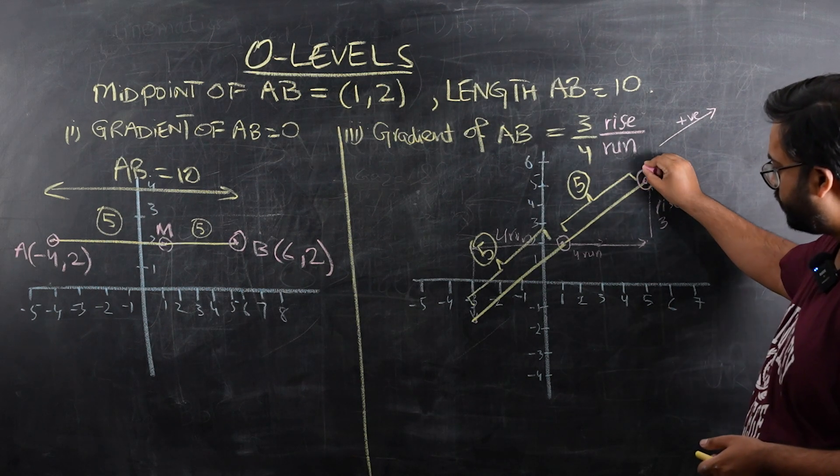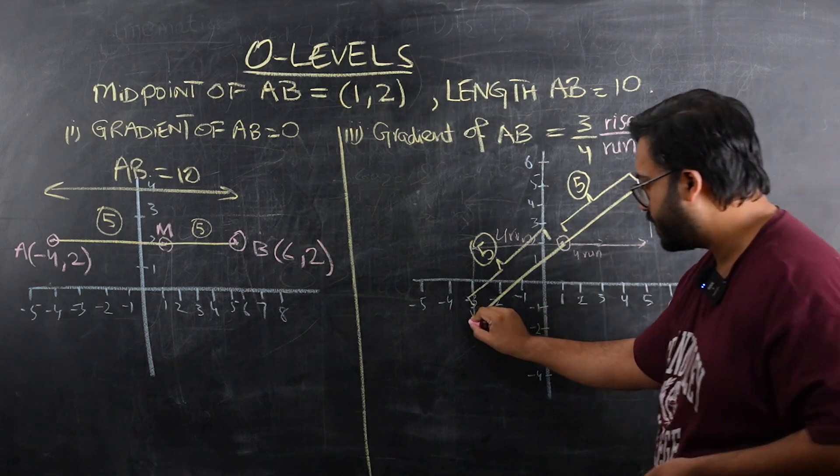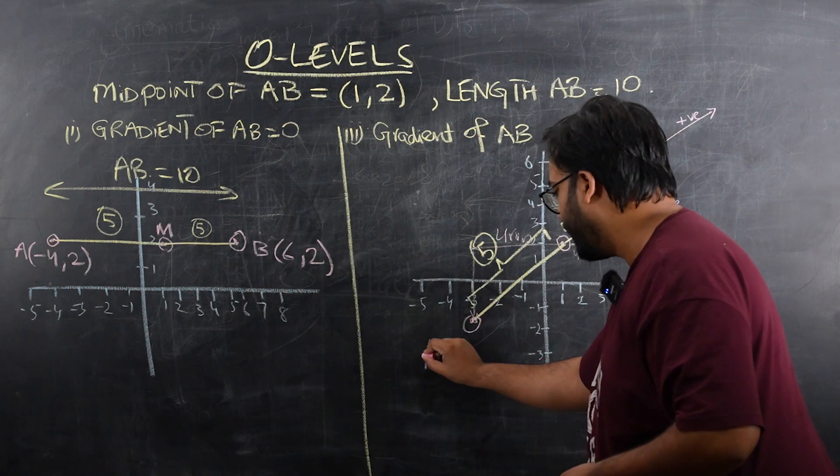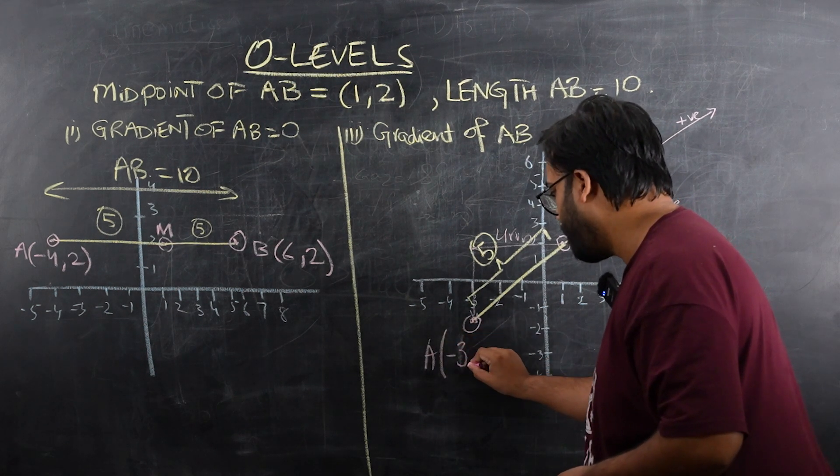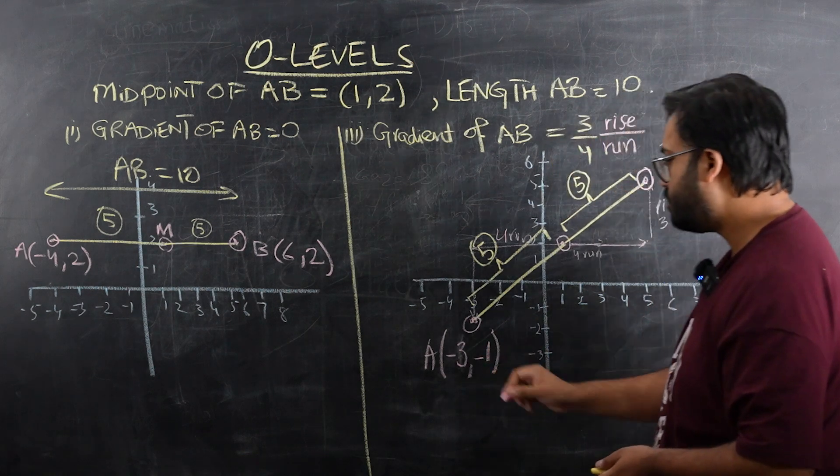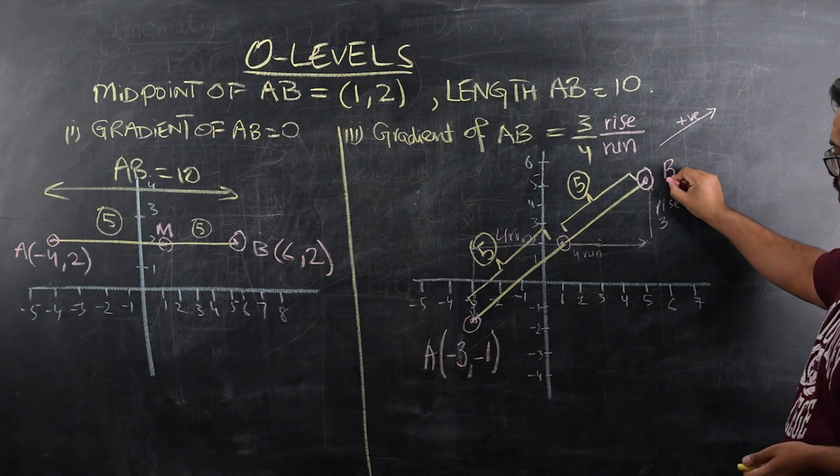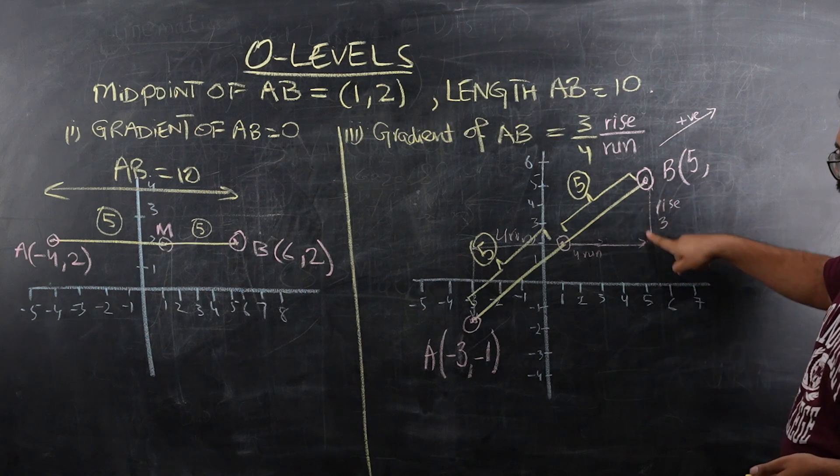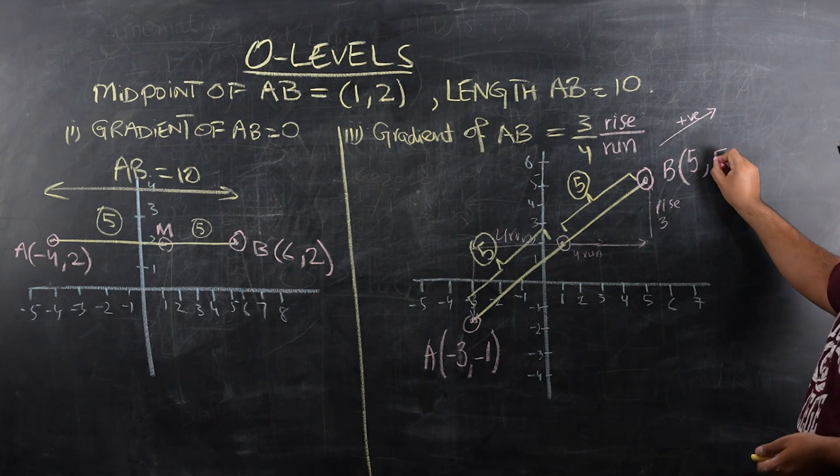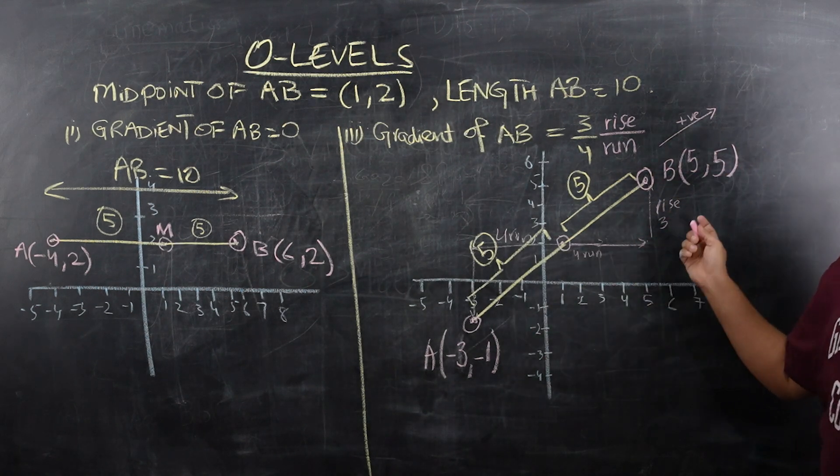Now we can declare this point as, say, this point is A. So I would write A as (-3,-1), and B as (5,5). We were starting at 2, we went 3 up, so we'll be at 5. So these are the coordinates of A and B.